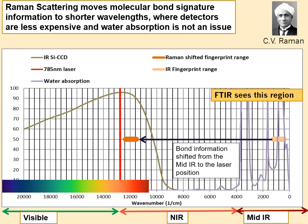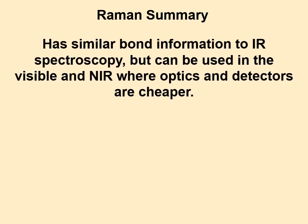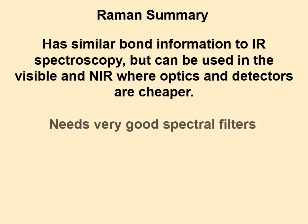The only thing is you need a very good spectral filter to block all those million laser photons so you see only the Raman-shifted photons. To summarize Raman spectroscopy: it has similar bond information to infrared spectroscopy, but you can use it in the visible, near-infrared, or even UV. You can move your area of study around optically to whatever works with your sample and optical system.